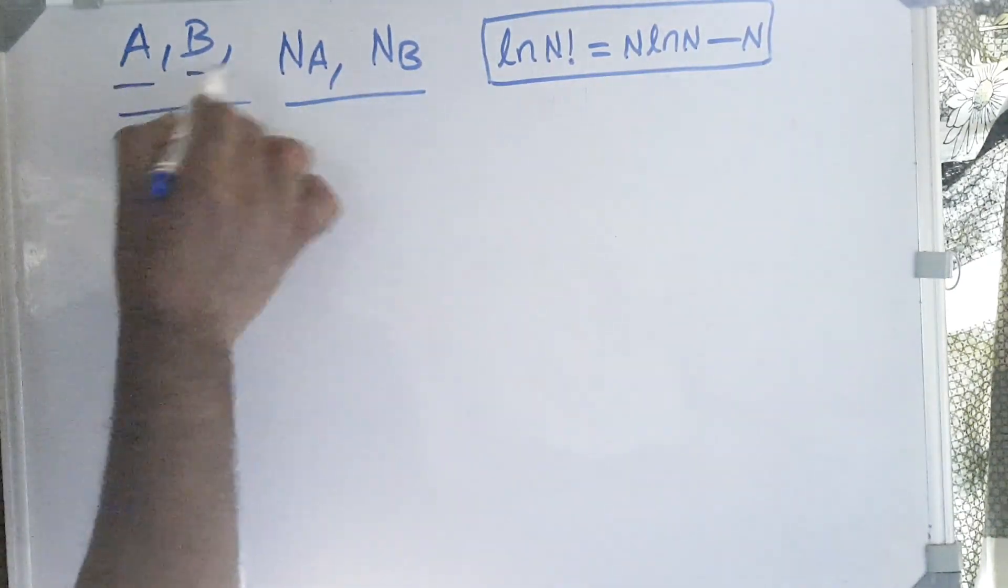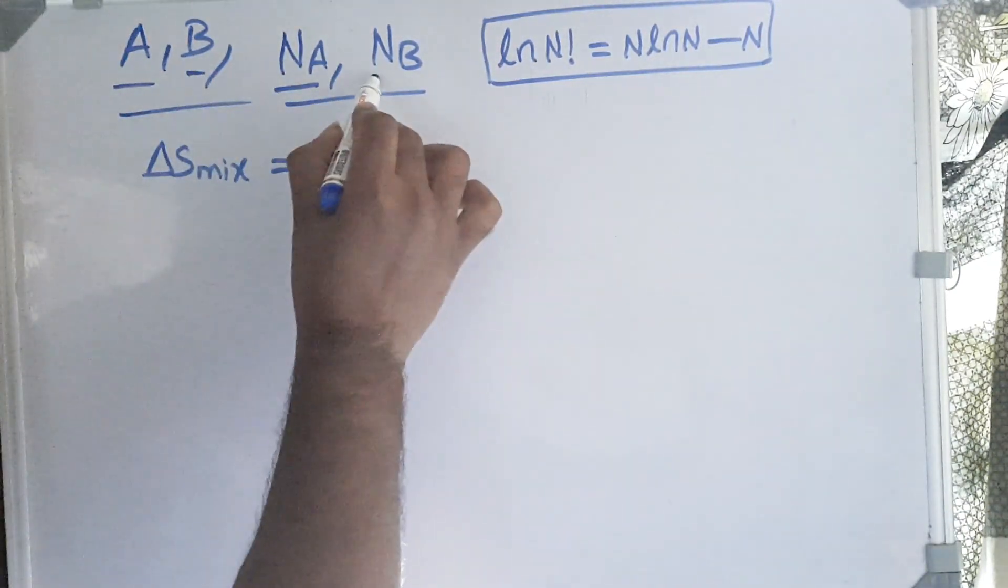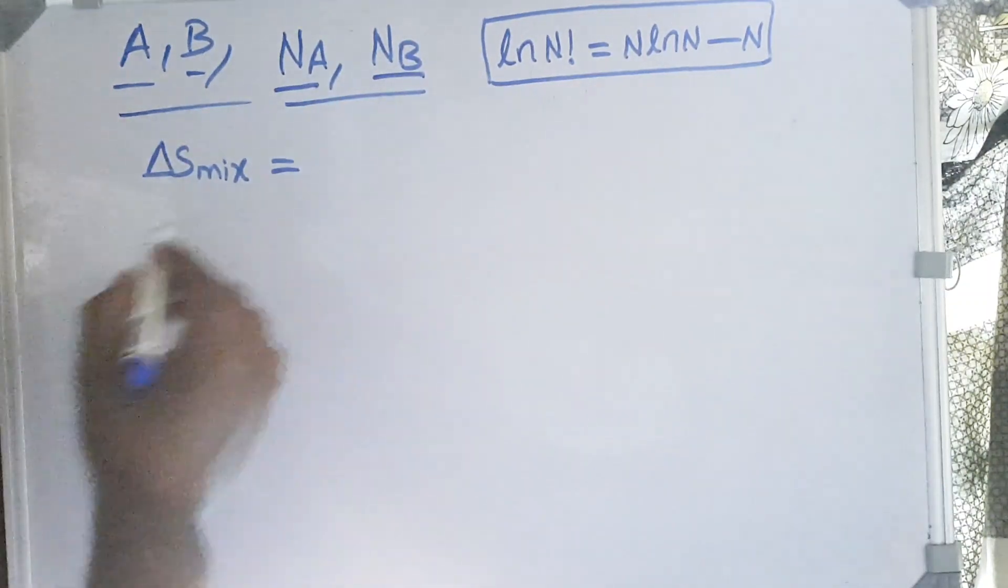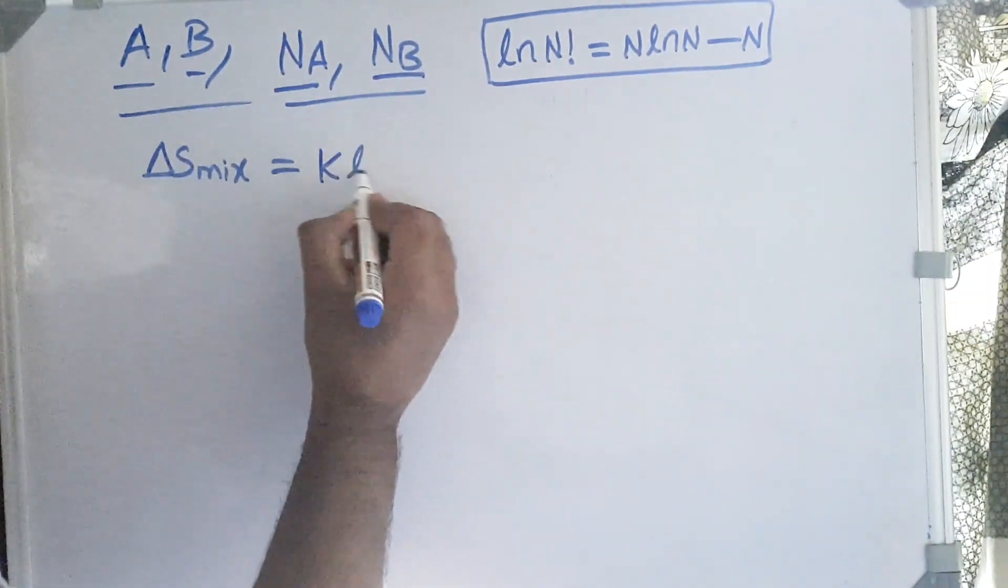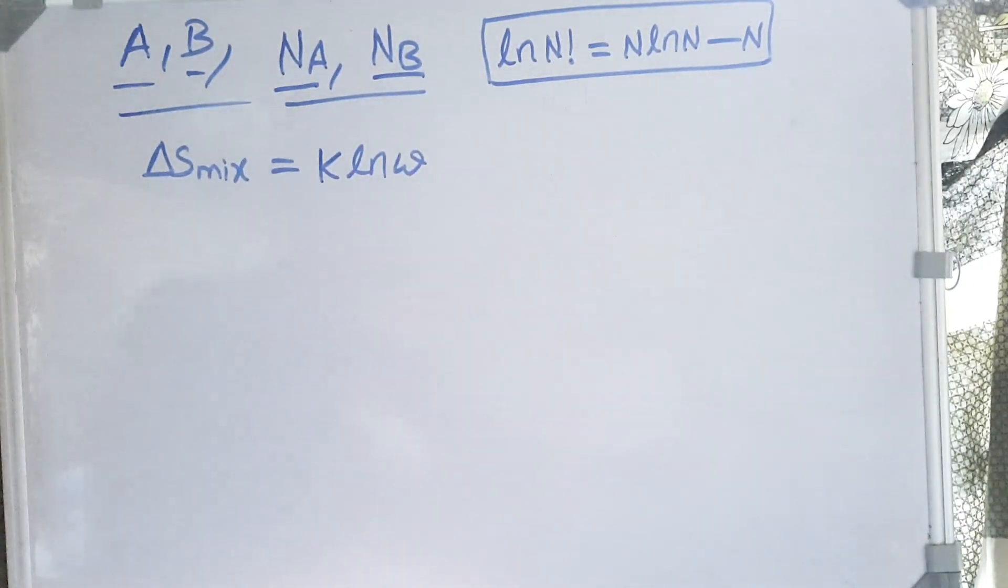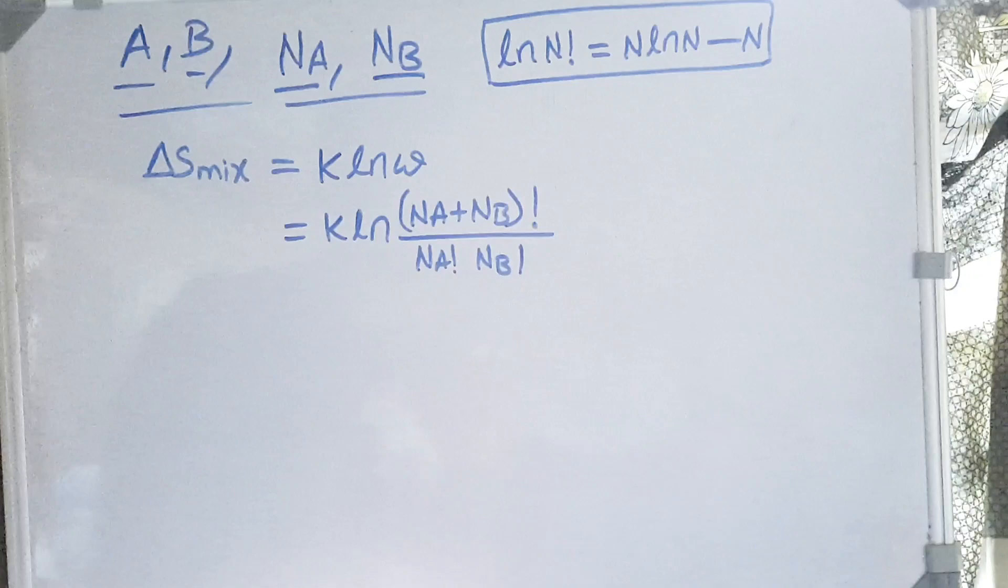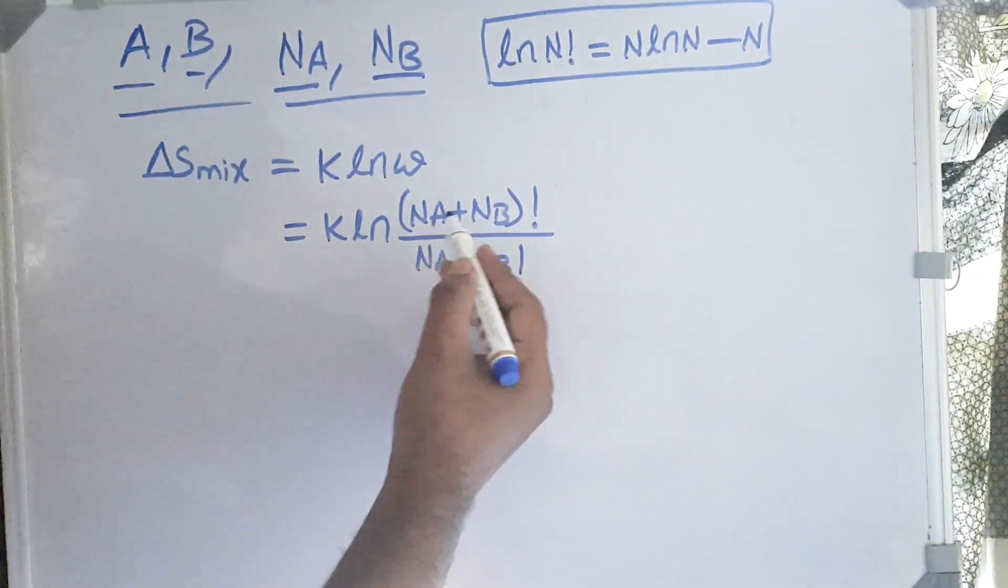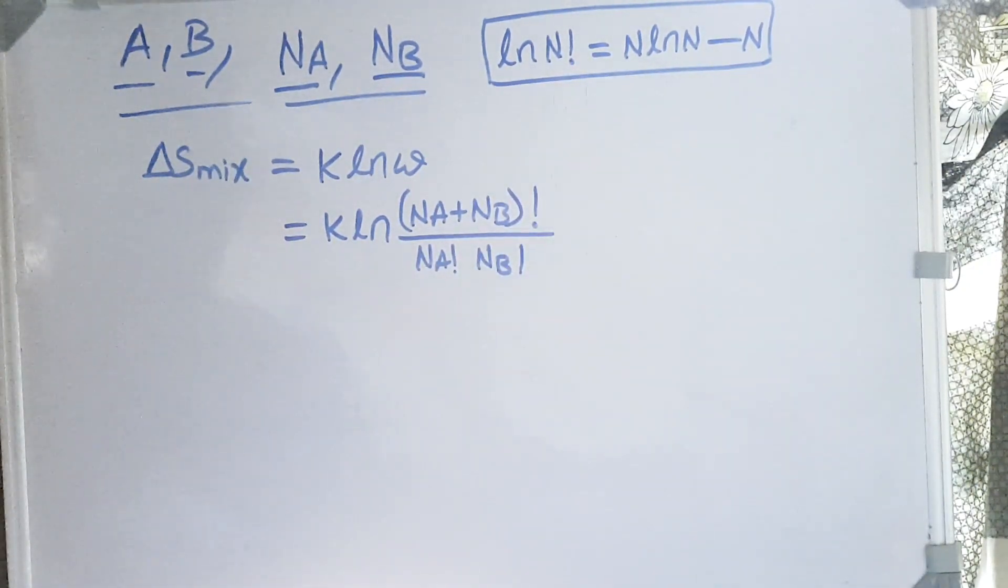Here we are mixing A and B. Na is number of A atoms and Nb is number of B atoms. Delta S mixing is given by K ln Omega, where K is Boltzmann's constant and Omega is total number of arrangements possible using Na and Nb. So the total number of arrangements possible are (Na + Nb)! divided by Na! and Nb!.